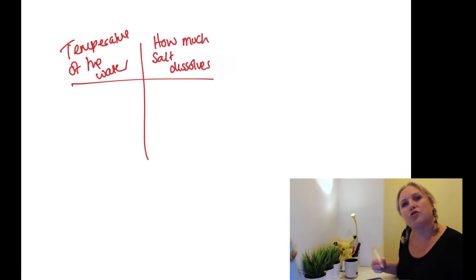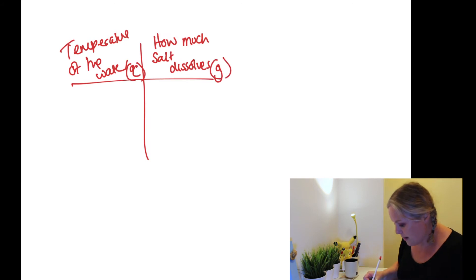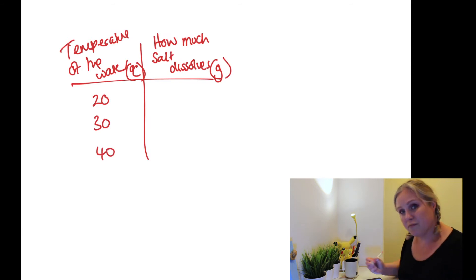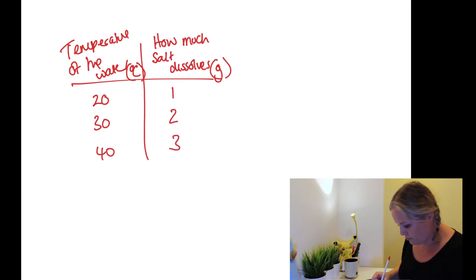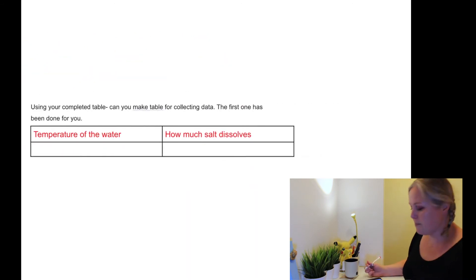We put the unit at the top, so the temperature of the water would be in degrees Celsius, and how much salt dissolves might be in grams. That means we can put just our raw numbers in the table because the units are already at the top. So for example, 2 grams would dissolve at 30 degrees Celsius.